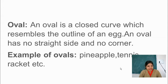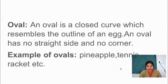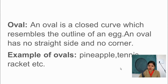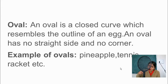So the next one we have is oval. An oval is a closed curve which resembles the outline of an egg — it looks like an egg. An oval has no straight side and no corner. Examples of ovals: pineapple is a fruit that is in the shape of oval. And this tennis racket — you can see the shape of this racket is oval.